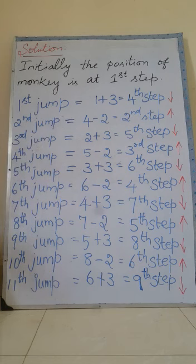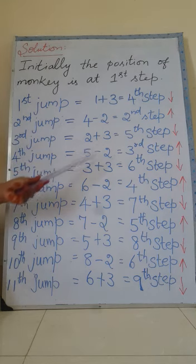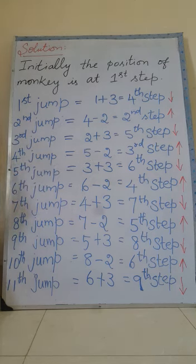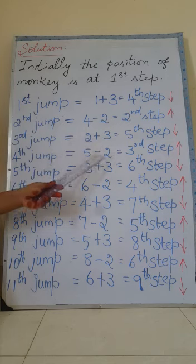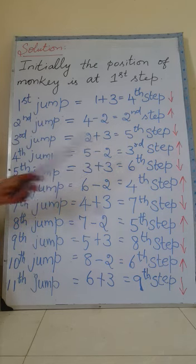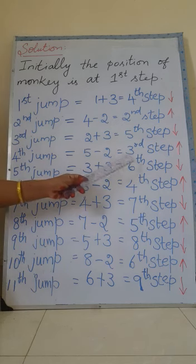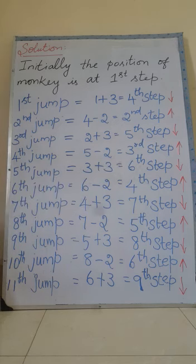Now the monkey again moves back two steps. So the fourth jump: starting from the fifth step, five minus two equals three. The position of the monkey is now the third step. Now move to the fifth step; the position finishes at the ninth step.